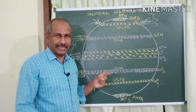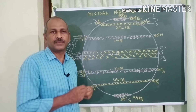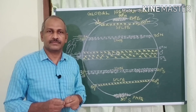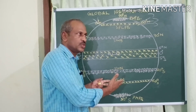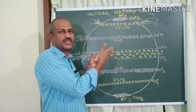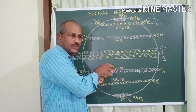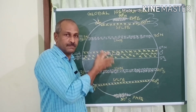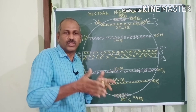Do these pressure belts remain intact — with no change, no movement? No, they move. They shift in accordance with the apparent movement of the Sun. All pressure belts shift northward with the northward progression of the Sun, and shift southward when the Sun moves from north to south.